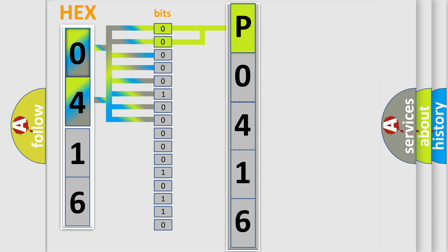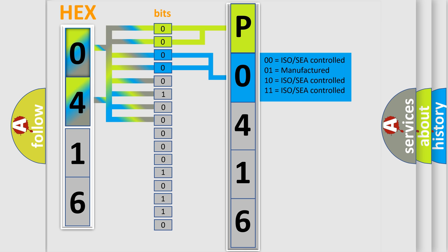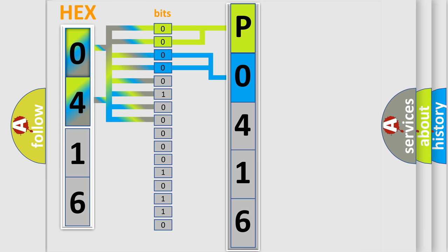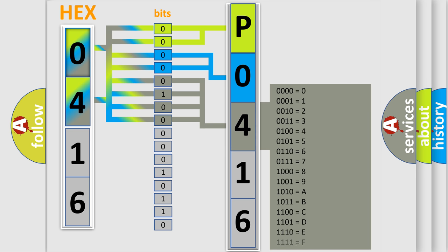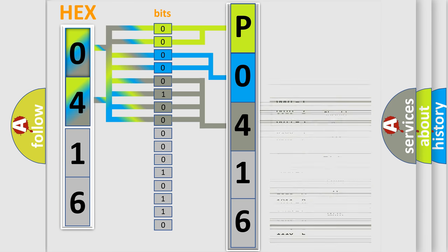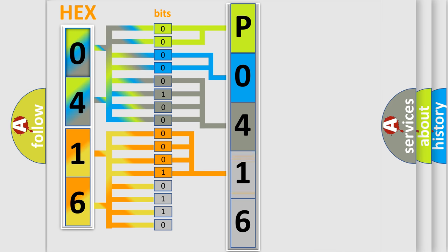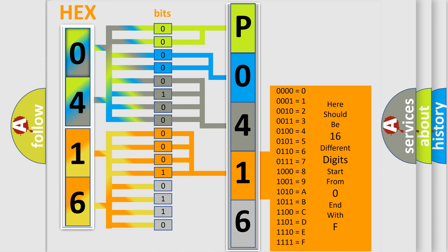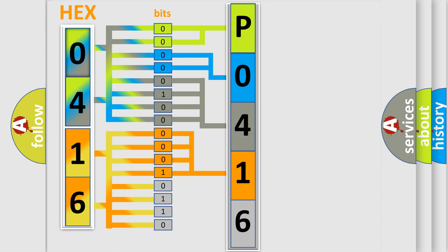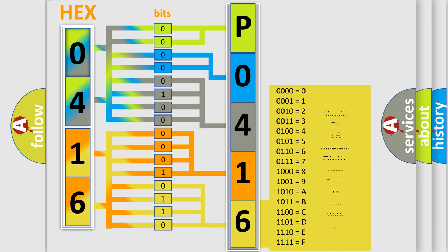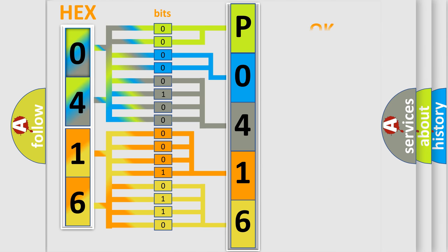The next two bits again determine the second character. The last bits of the first byte define the third character of the code. The second byte is composed of a combination of eight bits. The first four bits determine the fourth character of the code, and the combination of the last four bits defines the fifth character. A single byte conceals 256 possible combinations.